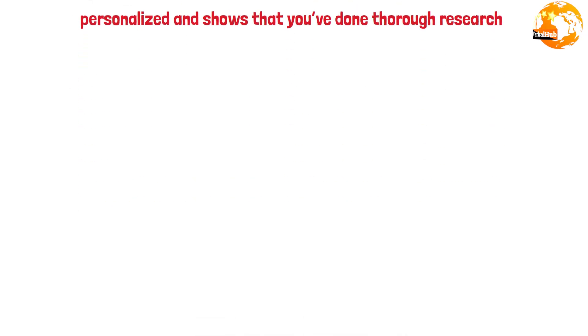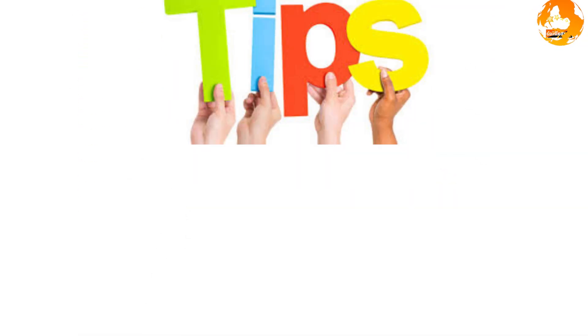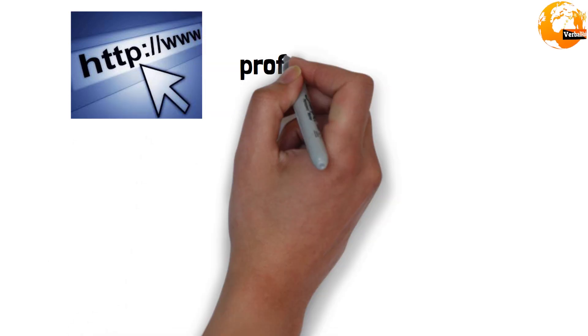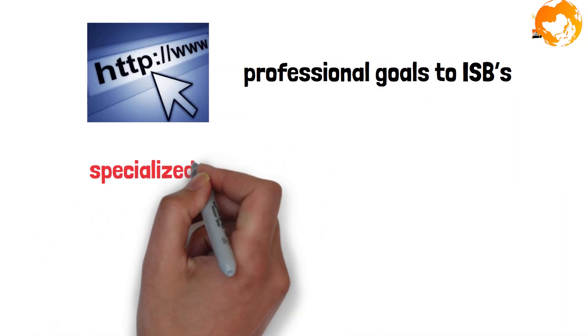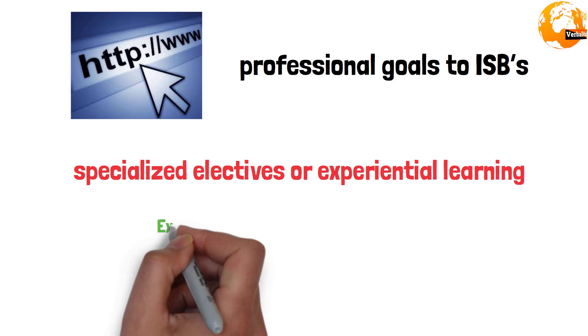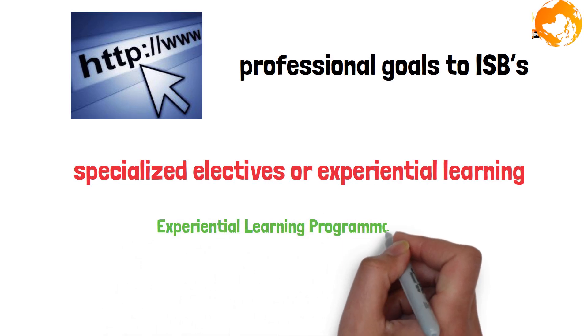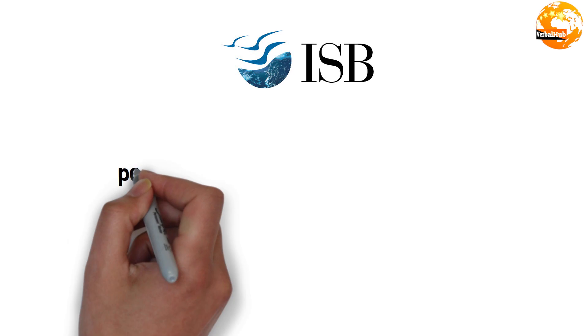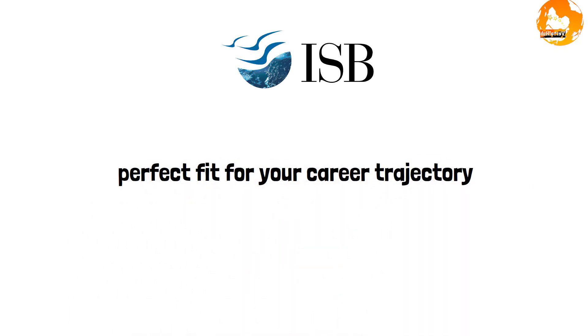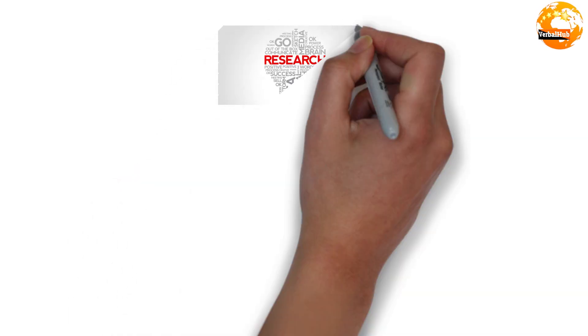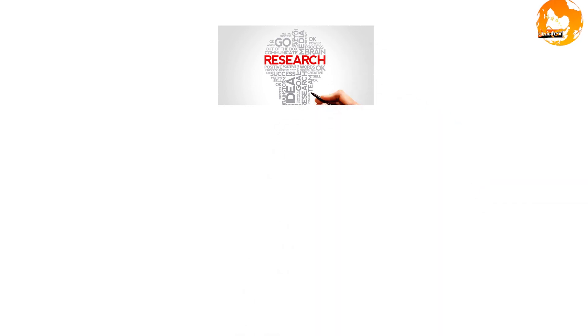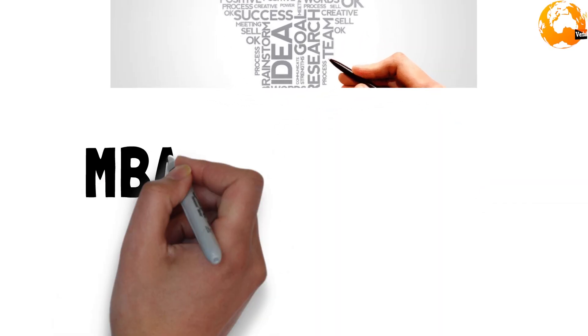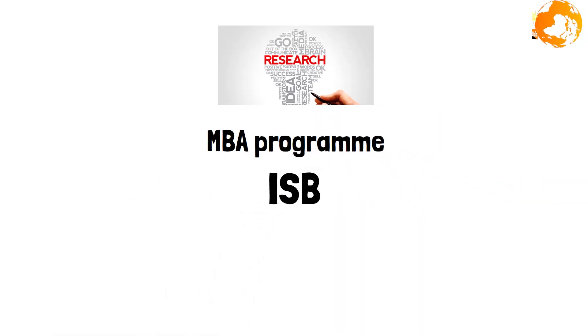Tips: Link your professional goals to ISB's offerings, such as their personalized electives or experiential learning opportunities like experiential learning programs (ELP). Demonstrate that ISB is the perfect fit for your career trajectory. Remember, whatever you are speaking should be based on your research and it should relate to your MBA program and then ISB. ISB and MBA program should be interlinked along with your career goal. If all are linked, it can become a perfect answer.